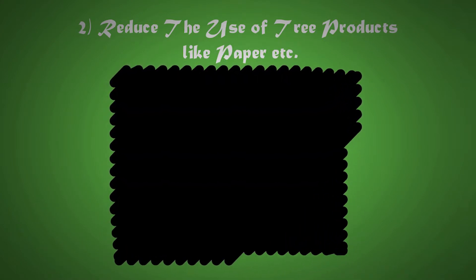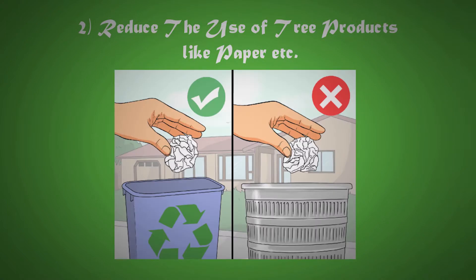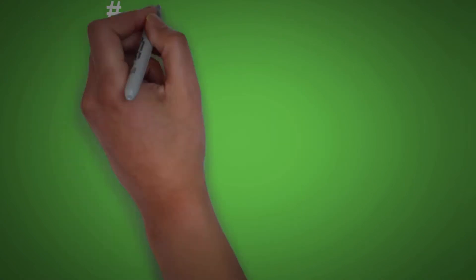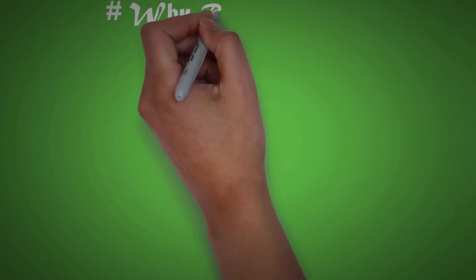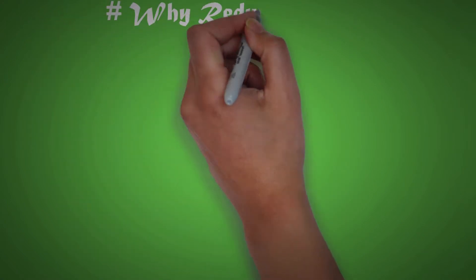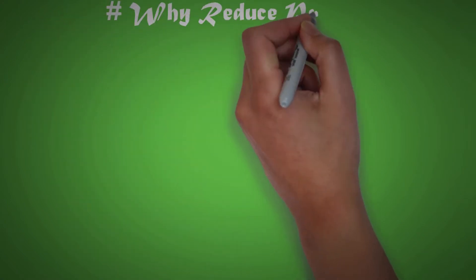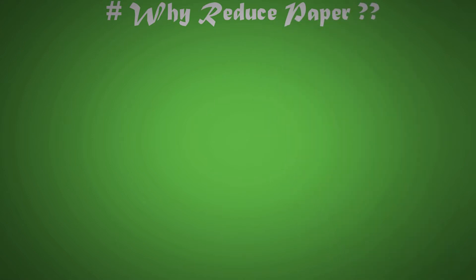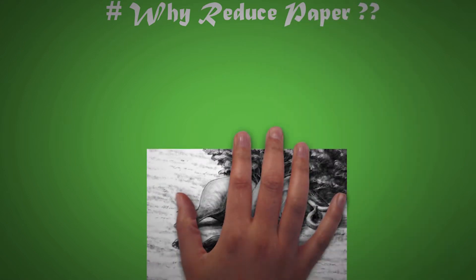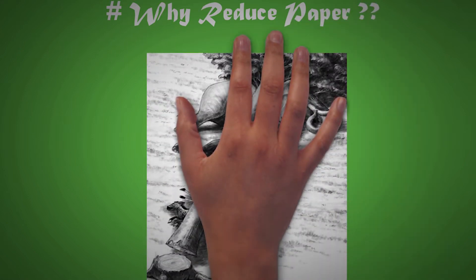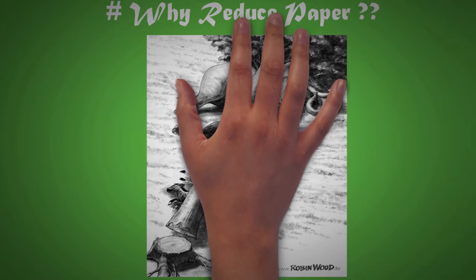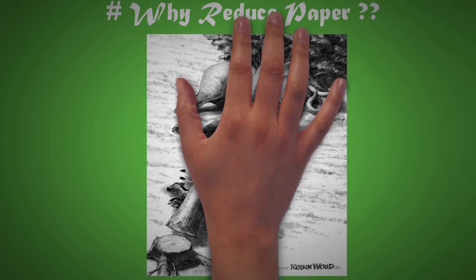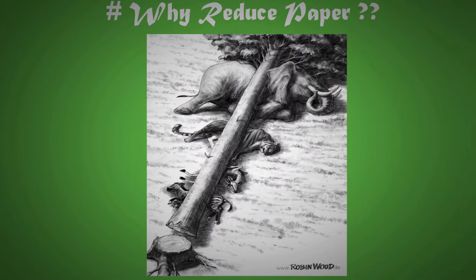Now why reduce paper? Since we know that paper is also a tree product, and if you continue to waste it then deforestation will also continue, and so will animal extinction.